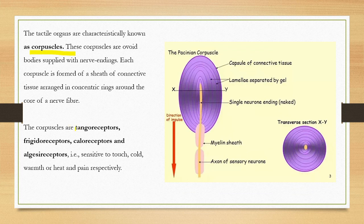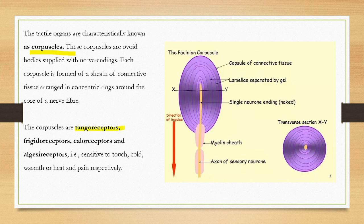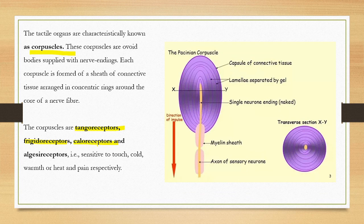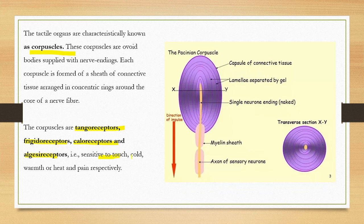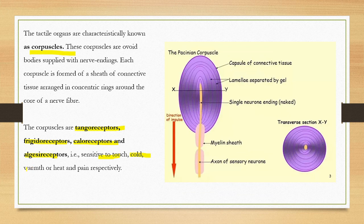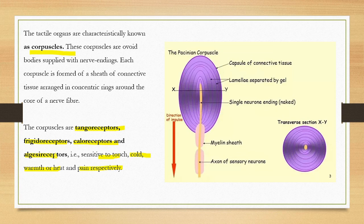There are different types of corpuscles. These are called tango receptors, frigido receptors, calo receptors, and algae receptors. Tango receptors are sensitive to touch. Frigido receptors are for cold. Calo receptors are for warmth or heat. And the pain receptors are the algae receptors, able to perceive pain.